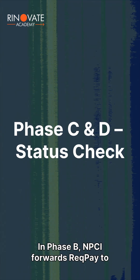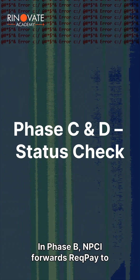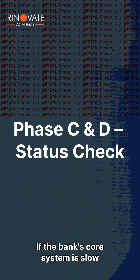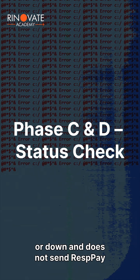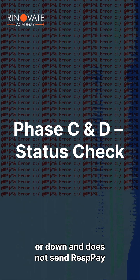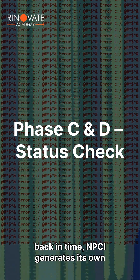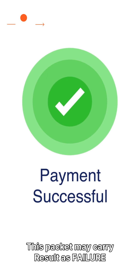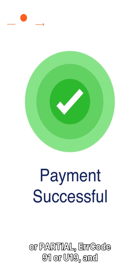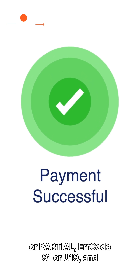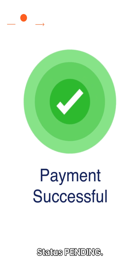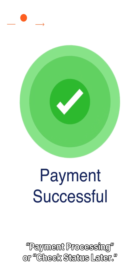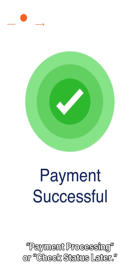In Phase B, NPCI forwards REQPay to the beneficiary bank. If the bank's core system is slow or down and does not send RESPay back in time, NPCI generates its own RESPay. This packet may carry result as failure or partial, error code 91 or U19, and status pending. The user's app then shows messages like 'payment processing' or 'check status later.'